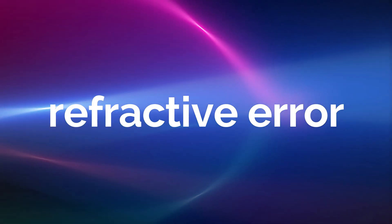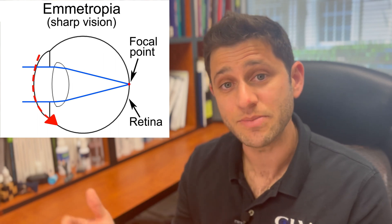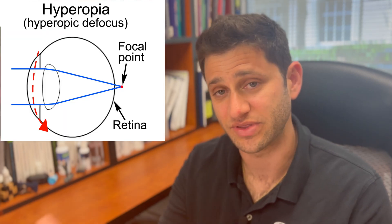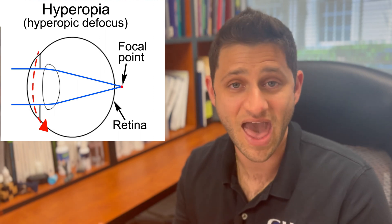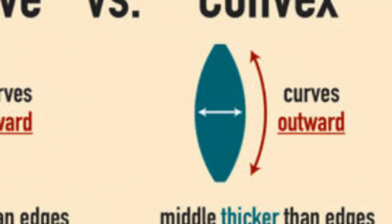Refractive error means the shape of your eye relative to its length is not quite ideal — the eye can be too curved or too flat. When the eye is perfectly in focus without correction, that's called an emmetropic eye. If you're farsighted, the eye is too flat, so you need more curve added with convex, or plus, lenses. We measure these in diopters — plus 1, plus 2, plus 3 — as the power increases, so does the focusing strength.